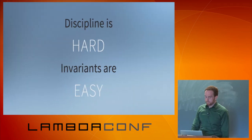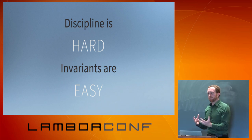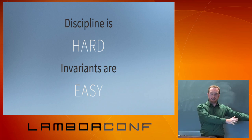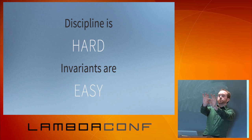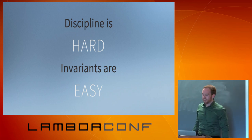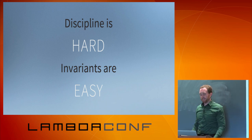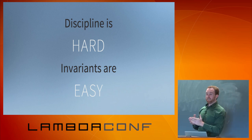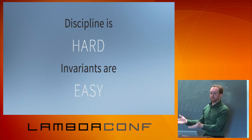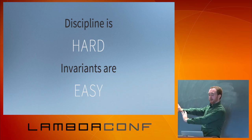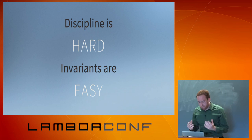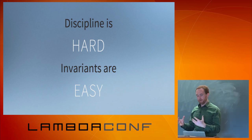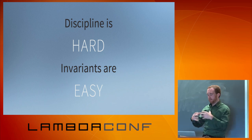I realized I'd been using discipline to do functional programming — I'd been choosing not to use certain features. It's like JavaScript: The Good Parts versus JavaScript. You have to use discipline to get the small book. Invariants, on the other hand, are easy. If you can't even reach for those things, you can put them out of your mind and stop thinking about them. Life becomes easier. So I wanted invariants around immutability and side effects — how can I get a language that enforces those? There are over 200 languages that compile to JavaScript, so I needed to whittle this down quickly.